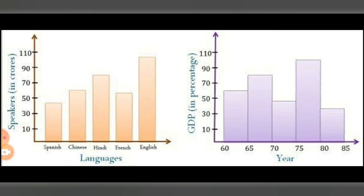A histogram presents numerical data whereas a bar graph shows categorical data. The histogram is drawn so that there is no gap between the bars, because it represents a continuous range of values. In a bar chart, there is proper equal spacing between bars, indicating discontinuity between discrete categories.